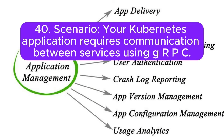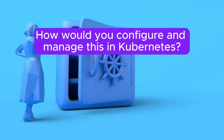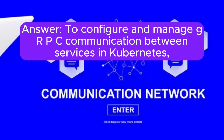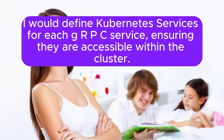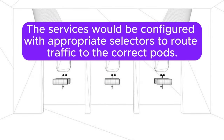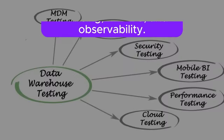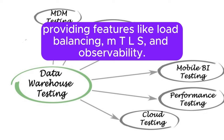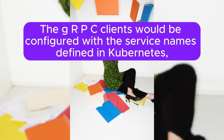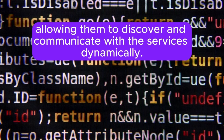Scenario 40: Your Kubernetes application requires communication between services using gRPC. How would you configure and manage this in Kubernetes? Answer: To configure and manage gRPC communication between services in Kubernetes, I would define Kubernetes services for each gRPC service, ensuring they are accessible within the cluster. The services would be configured with appropriate selectors to route traffic to the correct pods. I would use Envoy or Istio as a service mesh to manage and secure the gRPC traffic, providing features like load balancing, mTLS, and observability. The gRPC clients would be configured with the service names defined in Kubernetes, allowing them to discover and communicate with the services dynamically.